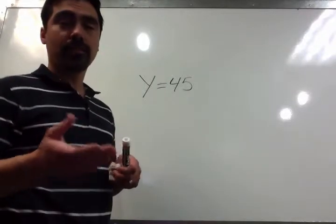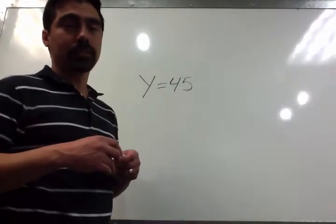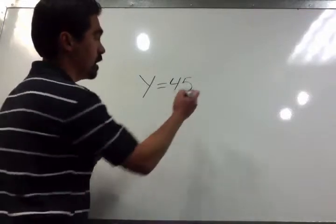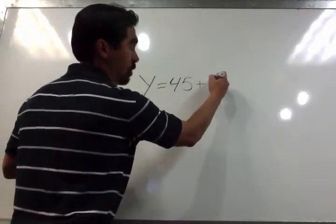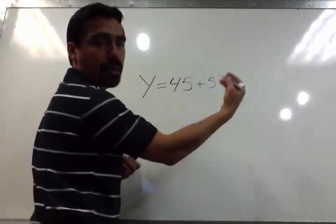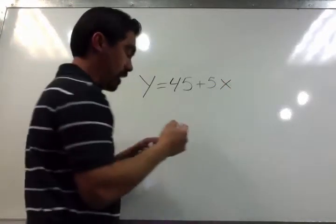And since it's 5 per month, well, anytime you have per or each, that's going to be your rate. So you're going to say, plus 5, and we don't know how many months, so we say x, 5x.